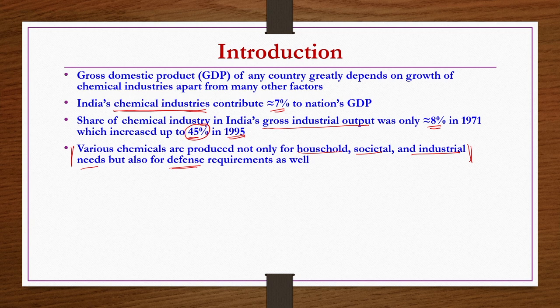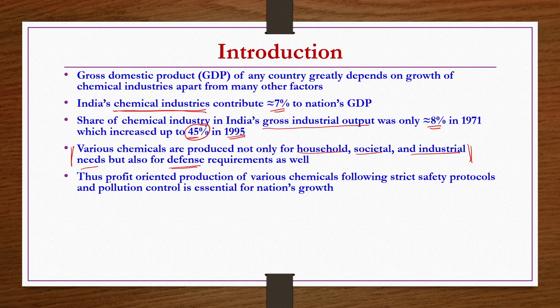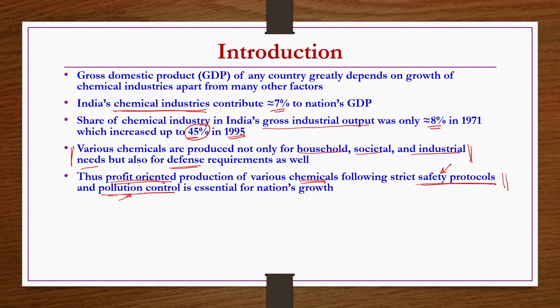As UG students of chemical engineering, it is important to understand how to produce different types of chemicals in a profitable manner, following strict safety protocols and pollution control. You may develop a process to produce a very good chemical under very profitable conditions, but if the plant is not safe, or if you do not follow safety protocols or pollution concerns, then your plant will not last longer — definitely considering today's competitive world. These two factors are very essential apart from the economics of the plant.